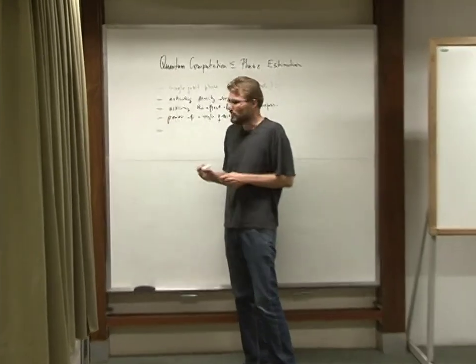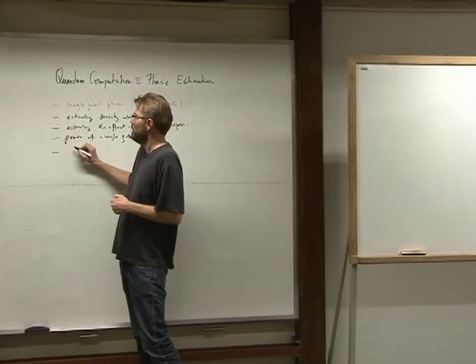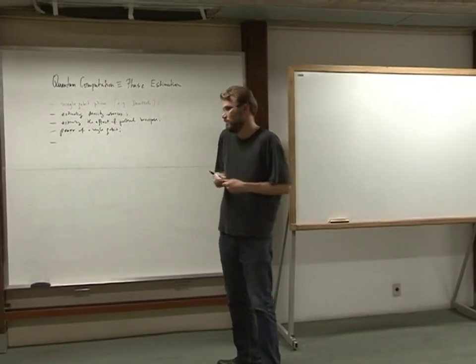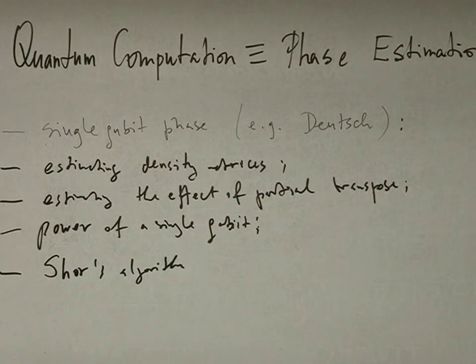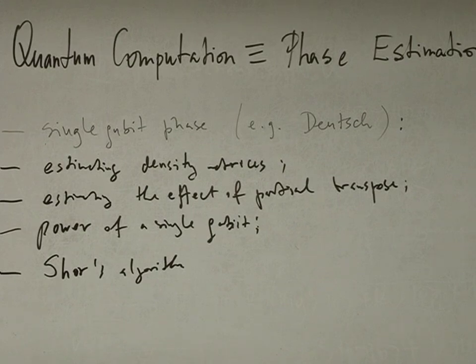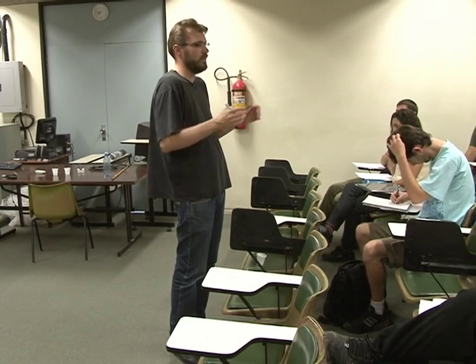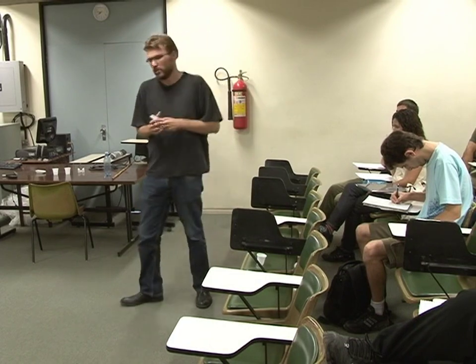Ultimately we'll look at Shor's algorithm within the framework of phase estimation. That's the final thing we'll do on the algorithms side. After that, we'll have about two days to talk about errors — how to model them, where they come from, and the physical implementations we've covered. We'll then discuss how to universally tackle error correction no matter what the implementation is, provided you have sufficient reliability of an individual gate, something like 99.999% efficiency on a controlled operation.